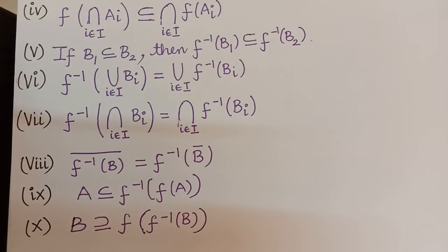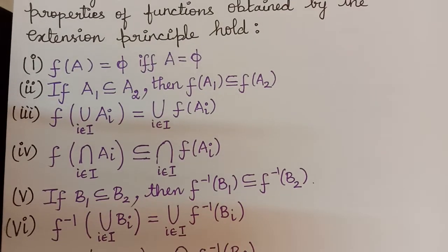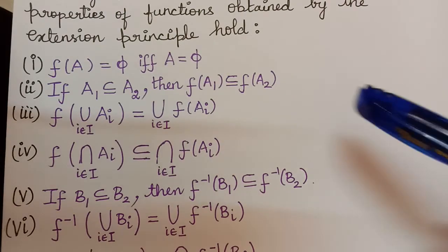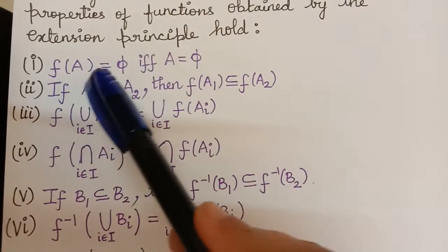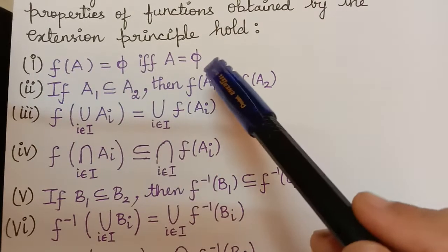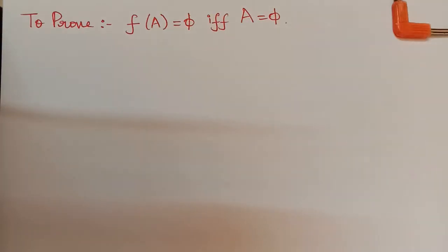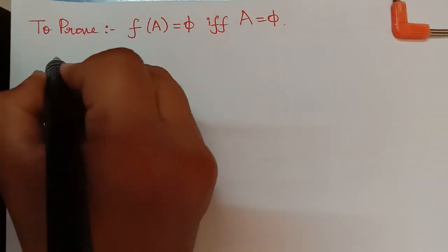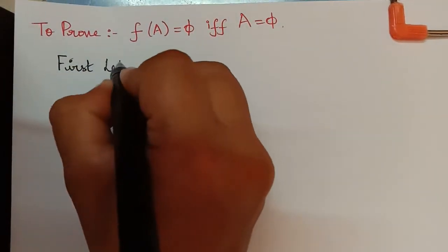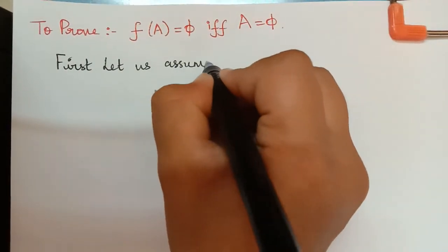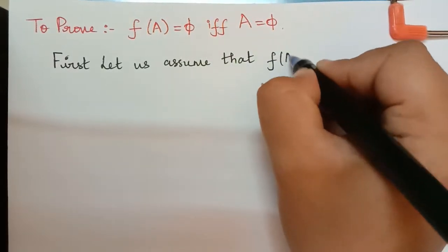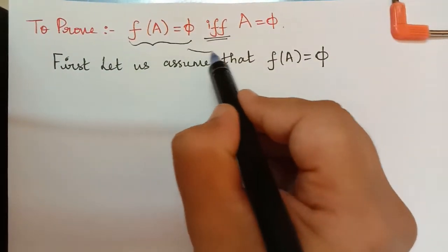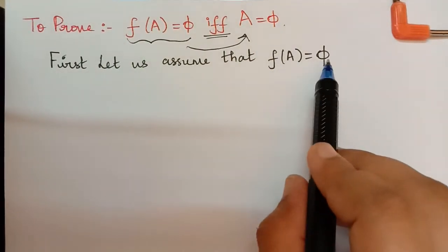The first property says that f(A) = φ if and only if A = φ. This property says that a null set will be mapped onto a null set only. Let us see the proof of this property. We begin by assuming that f(A) = φ, since we have an if and only if condition.